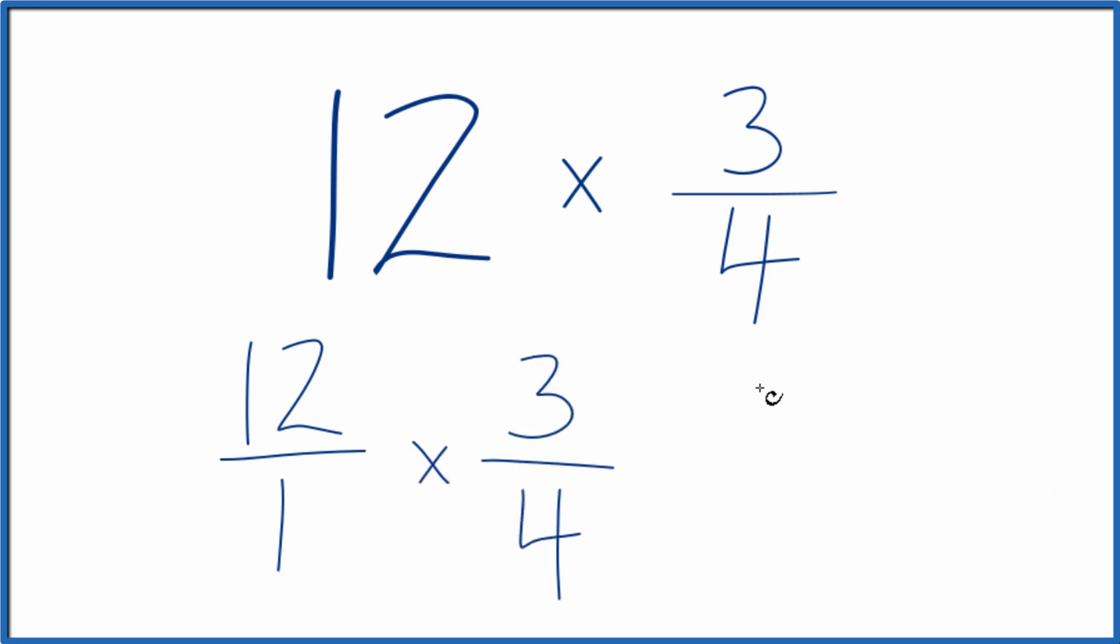When we multiply fractions, we multiply the numerators, then the denominators. 12 times 3 is 36. 1 times 4 is 4. So 12 times 3 fourths equals 36 over 4.